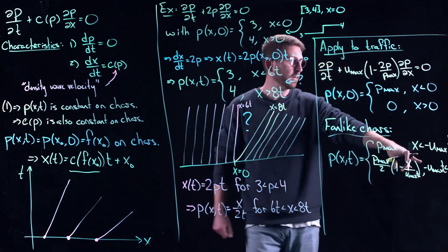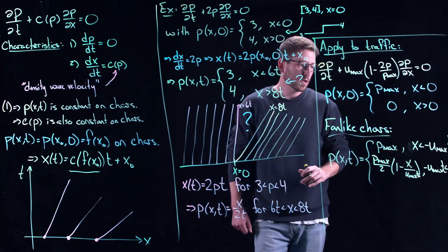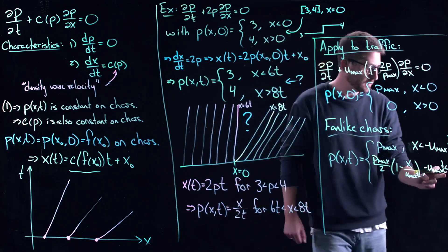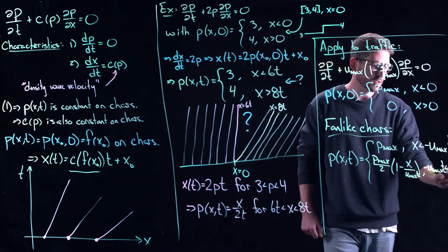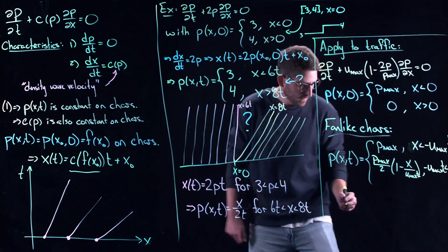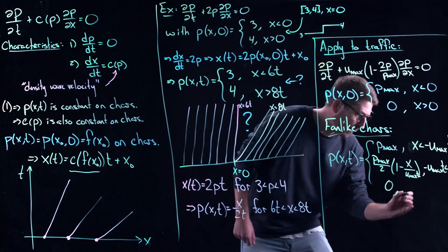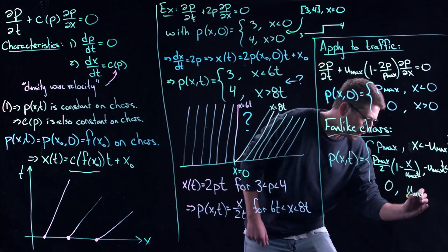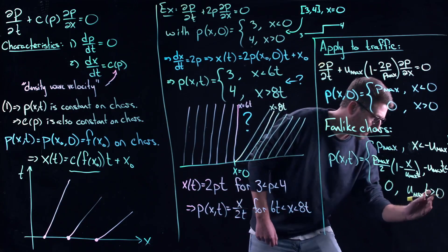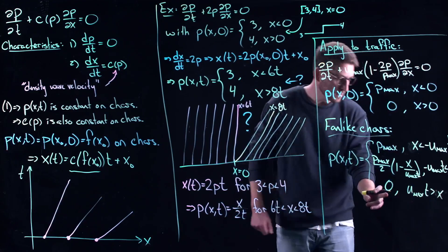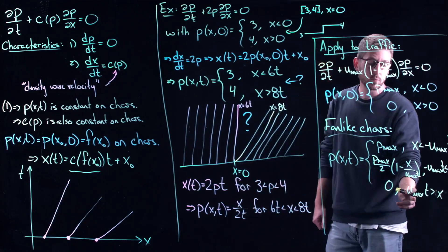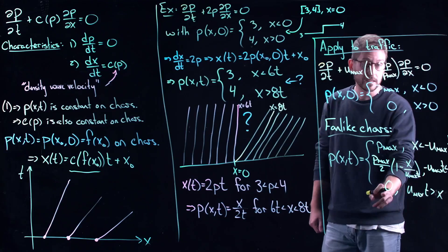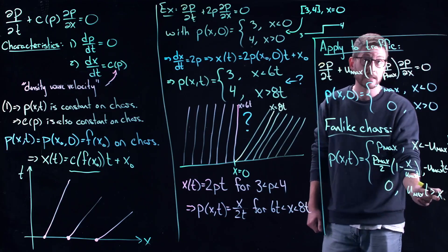This says -uₘₐₓt is less than x, which is less than uₘₐₓt. And way up above, the density is still zero because the maximum speed was uₘₐₓ, so people couldn't get up to this point in space yet.